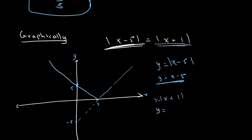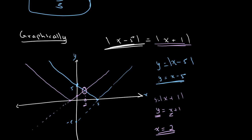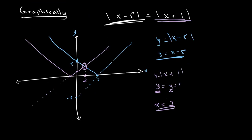Next, we draw the graph for the absolute value of x plus 1, starting with y equals x plus 1. This meets the y-axis at 1 and the x-axis at x equals negative 1. We reflect in the x-axis to get the absolute value graph. The point of intersection, as you can see, is at x equals 2, therefore x equals 2. Note that when solving graphically, you'll typically need to also solve algebraically to confirm the exact answer.